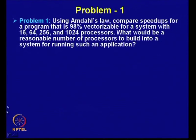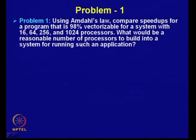The first problem is: using Amdahl's law, compare speed-ups of a program that is 98 percent vectorizable for a system with 16, 64, 256, and 1024 processors. What would be a reasonable number of processors to build into a system for running such an application?